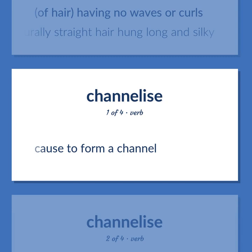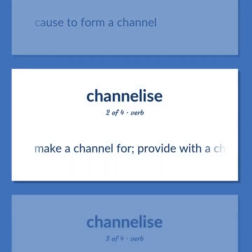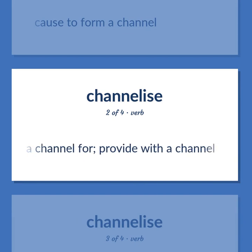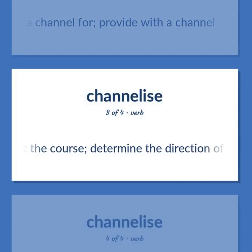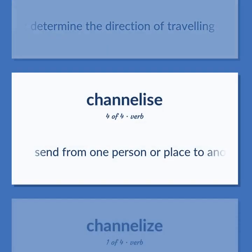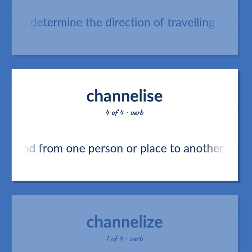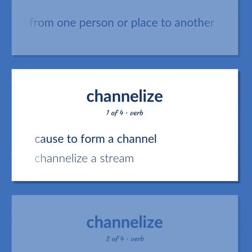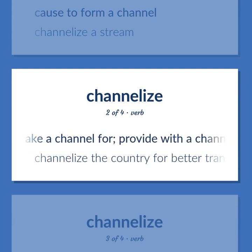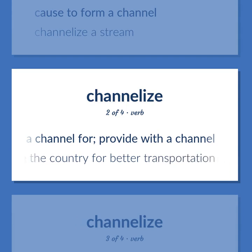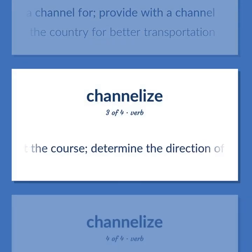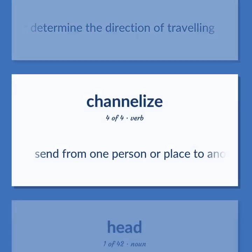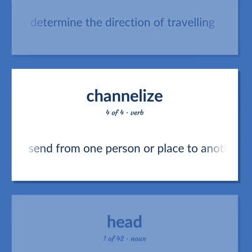Channel: cause to form a channel. Make a channel — make a channel for — provide with a channel. Direct the course — determine the direction of traveling. Send from one person or place to another. Cause to form a channel. Channelize a stream. Make a channel for — provide with a channel. Channelize the country for better transportation. Direct the course — determine the direction of traveling. Send from one person or place to another.